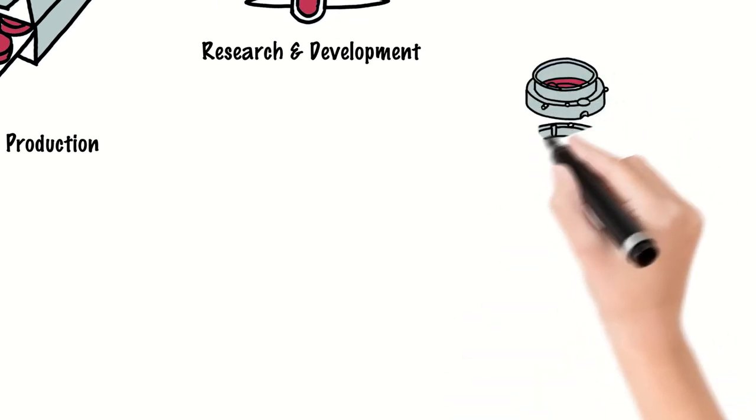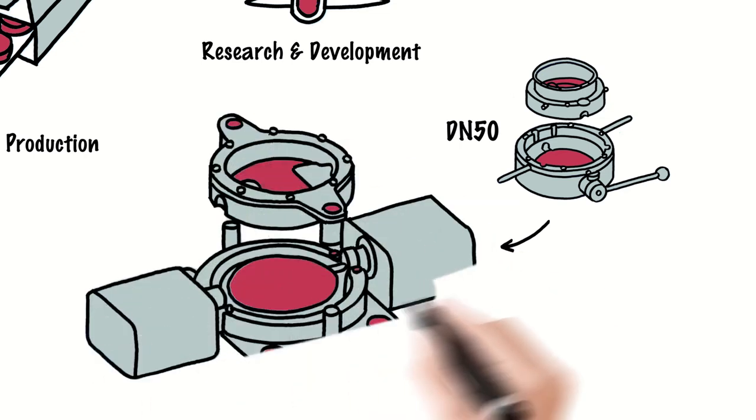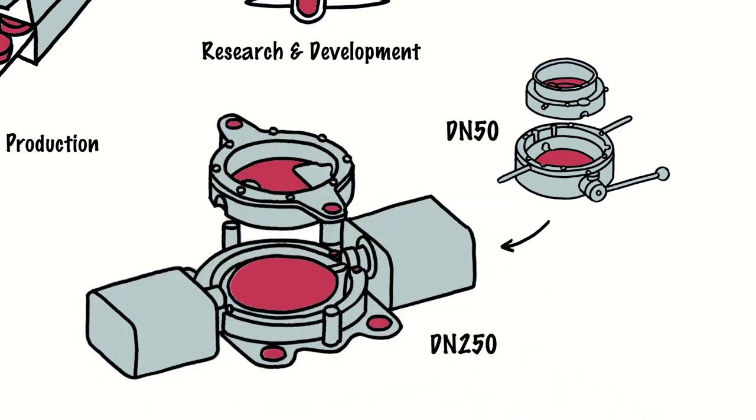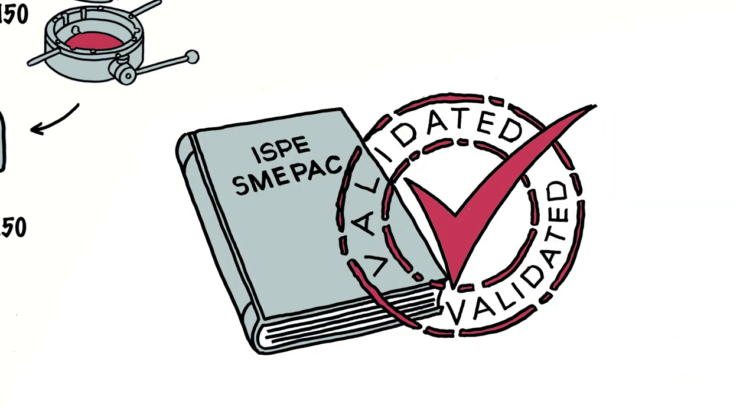PharmaSafe valves are available in sizes from 50 mm to 250 mm, making it an ideal solution for all production scales. Containment performance has been independently validated according to the ISPE SMEPAC guideline.